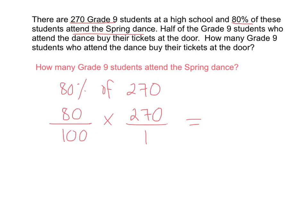Before we solve this, I want you to write the fraction 80 out of 100 into lowest terms. Think about how you can reduce this. What are 80 and 100 both divisible by? To figure that out, we can start by listing the factors of 80 and the factors of 100 and then find the greatest common factor. That will tell us what number they're both divisible by.